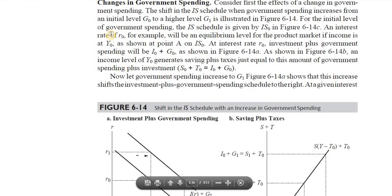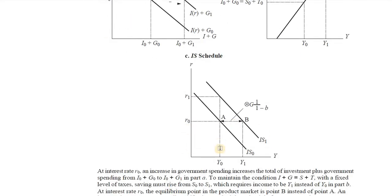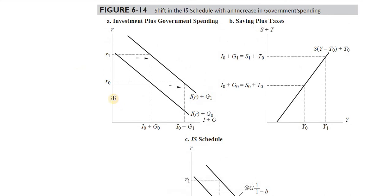What can cause a shift in the IS curve? Number one: changes in government spending. At the same rate of interest R0, if government increases its expenditure, investment plus government spending shifts rightward. Government expenditure is not dependent upon the rate of interest — the government incurs expenditure due to external considerations, because it is a welfare state.